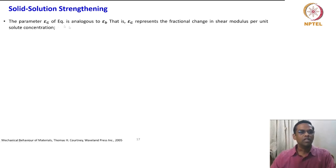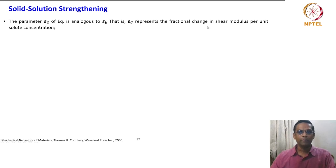The parameter epsilon_G in the equation is analogous to epsilon_B. Epsilon_G represents a fractional change in the shear modulus per unit solute concentration. Earlier, epsilon_B was related to size difference; here it is the shear modulus per unit concentration. That is, epsilon_G is equal to 1 by G times d(G) by d(C).